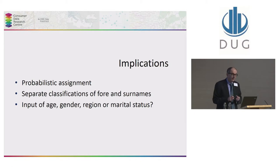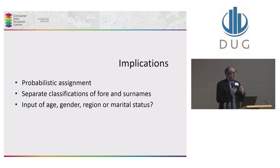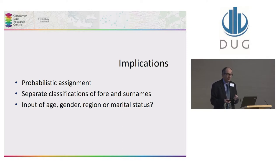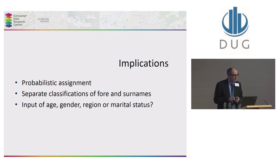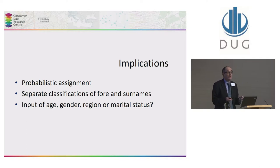We have built at CDRC a range of classifications of ethnicity based on naming conventions, some of which are algorithmic, some of which are based on using the secure research service of the ONS. Our conclusions are: first, we should always assign individuals probabilistically — deterministic solutions can very often be misleading. We should also separately consider given names and surnames because they each bear different correspondences with self-assignment of ethnicity.